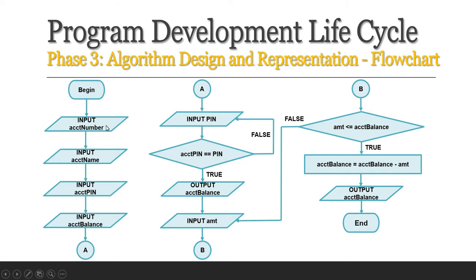We will capture the inputs: account number, account name, account pin, and account balance. Afterwards, the program should ask the user to input the pin, and the program should check whether the account pin from the card is equal to the pin entered by the user. If it is false, the program should allow the user to re-enter the pin. And once true, the program should display the account balance on screen, so the user would know how much he or she could withdraw.